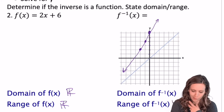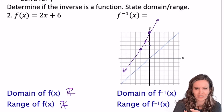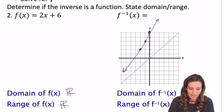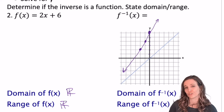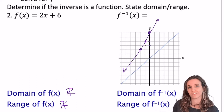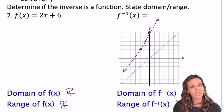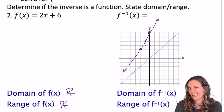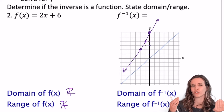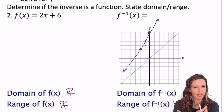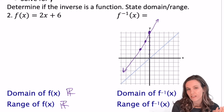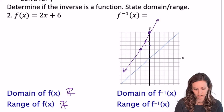Slope-intercept form — we got it. Y-intercept six, slope's two over one, got my line. I know the domain and range are just all real numbers. Now, how do we find an inverse? If in the table all we were doing was switching x and y to find the inverse graph, I can do the same thing with a function.